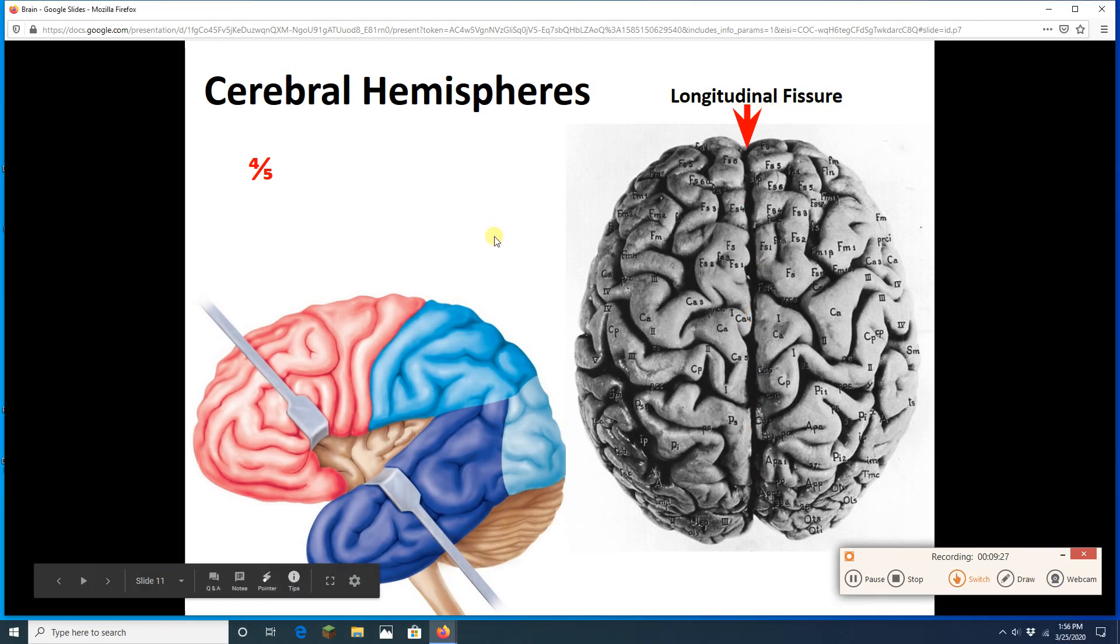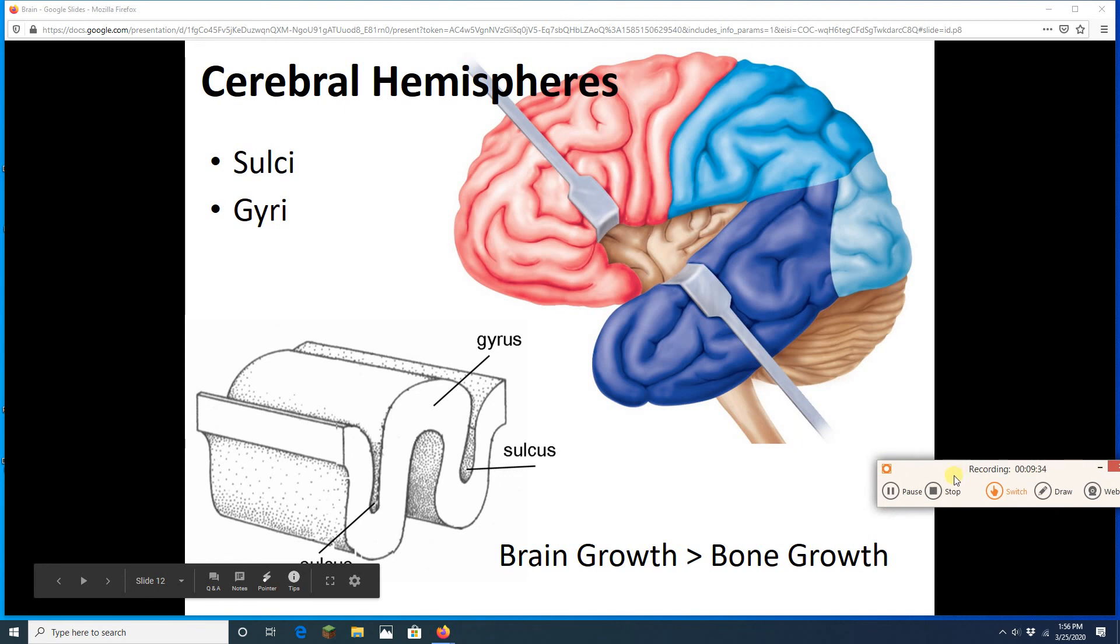Now, all the cerebral hemispheres surface is going to be really wrinkly. We're going to have ridges. Each ridge is called a gyrus. And then grooves. Each groove is called a sulcus. And this happens because the brain grows faster than bone. And what that does is it forces the cerebrum to fold in on itself as we grow.